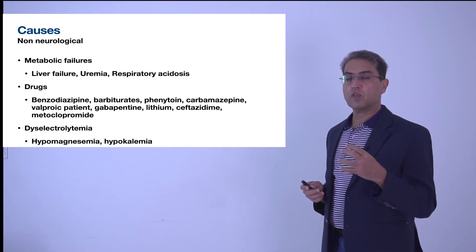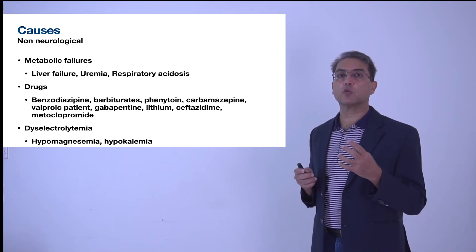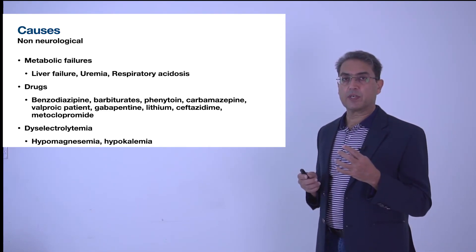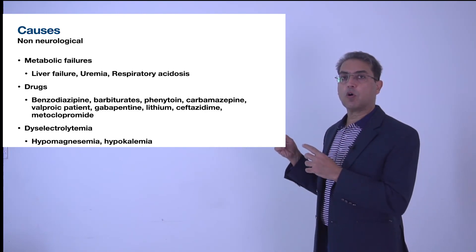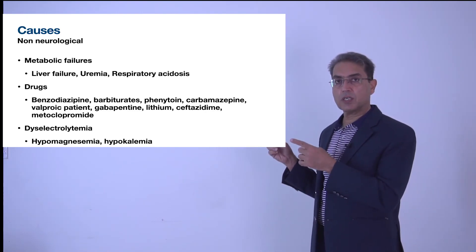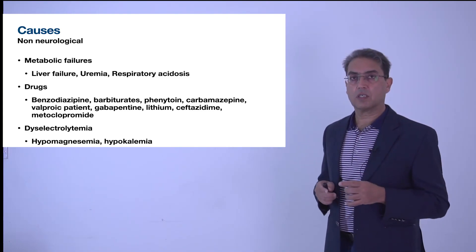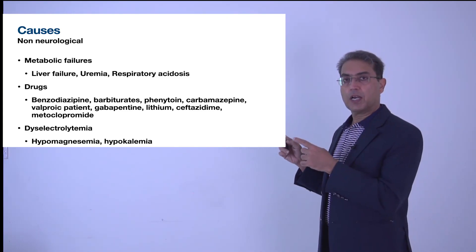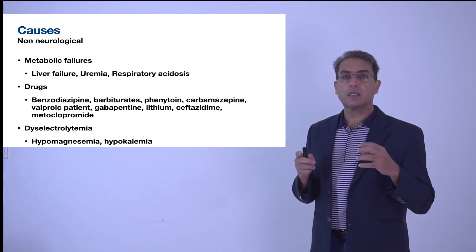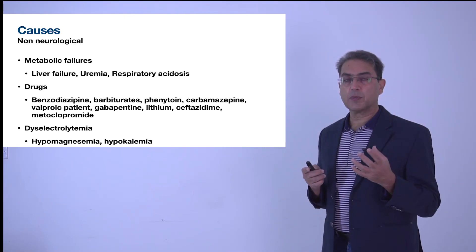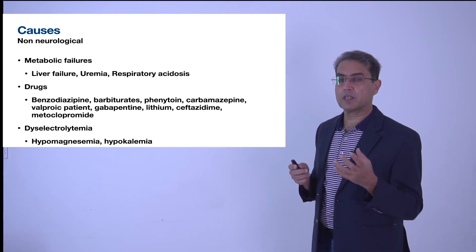So in this video, we have seen what is flapping tremor and what are the usual causes. When you see a patient with flapping tremor, you must look into all these conditions. It can be neurological or non-neurological. Neurological is usually unilateral, but in some cases can be bilateral. If it is bilateral, it is generally because of metabolic disturbances, drugs, or electrolyte disturbances.